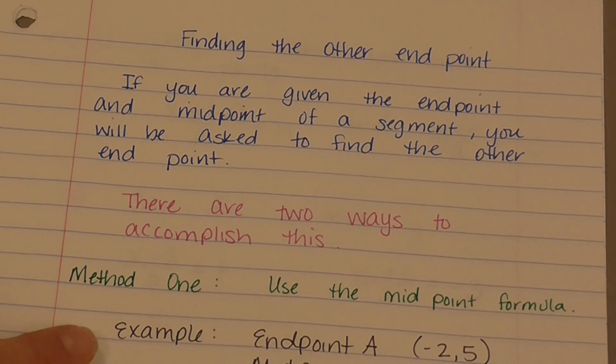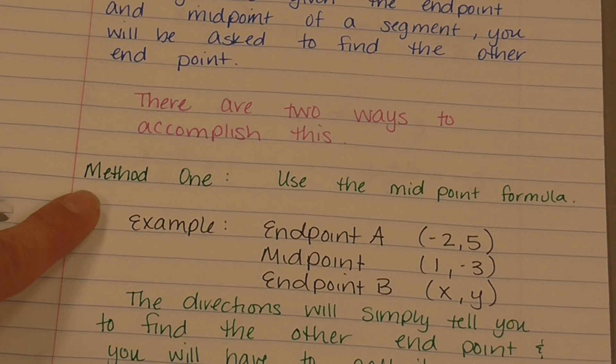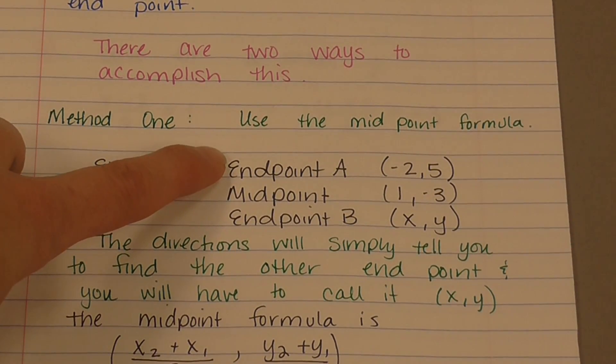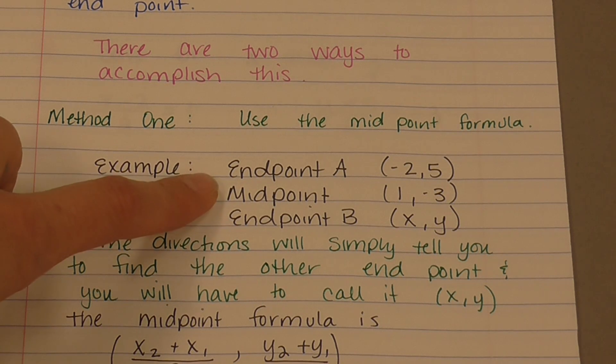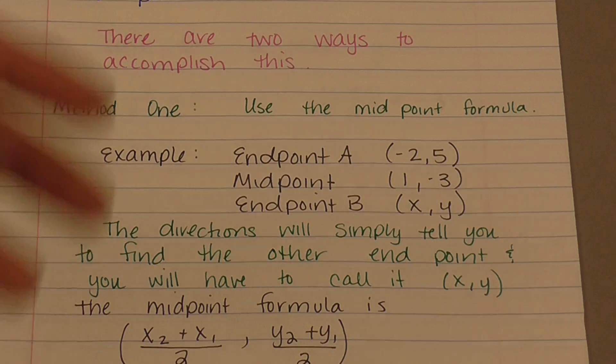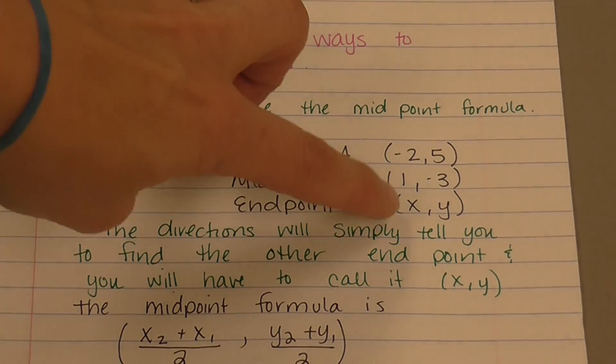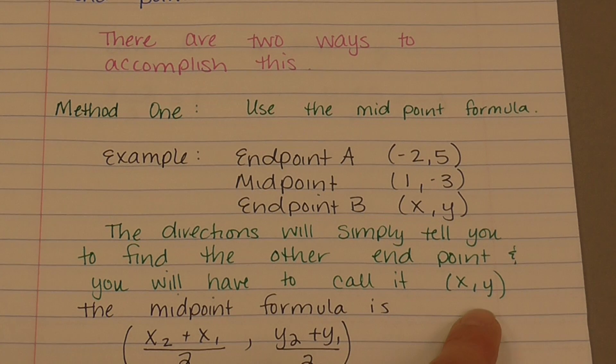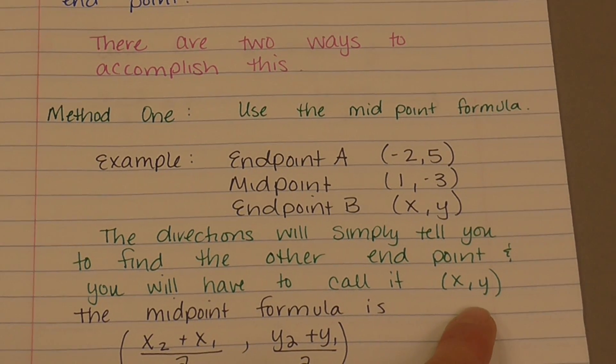Method 1, and what we're going to do is we're going to use the midpoint formula. So the example is that they gave you this endpoint A of negative 2, 5, and a midpoint of 1, negative 3, and they ask you to find the other endpoint. So they're not going to give you endpoint as x, y. You are going to have to write in x, y. So they're just going to tell you here's your endpoint, here's your midpoint, find the other endpoint.